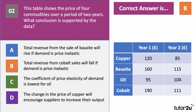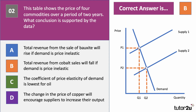Let's go through the answers one by one. A — total revenue from the sale of bauxite will rise if demand is inelastic. Well, the price of bauxite has gone down, and if demand is inelastic, consumers of bauxite will spend less on the product — revenue will fall. C — we can't infer anything from the data about the elasticity of demand for oil. D — the price of copper has fallen, so copper mines would likely reduce their output because the returns from extraction have declined. B is the right answer: with inelastic demand, if the price of cobalt goes down, total revenue falls from P1×Q1 to P2×Q2.